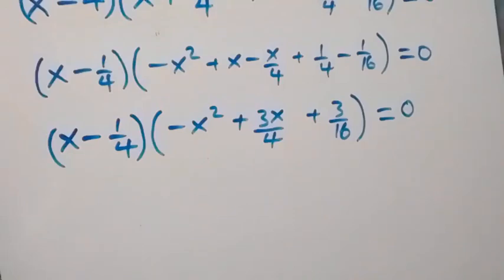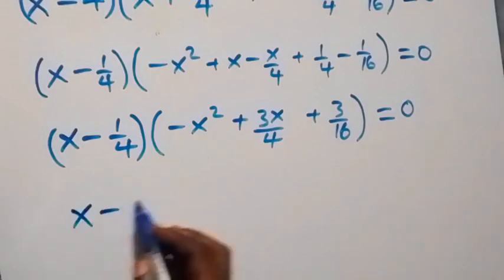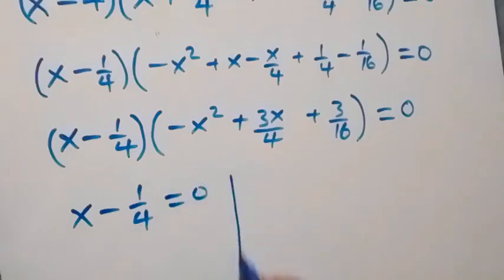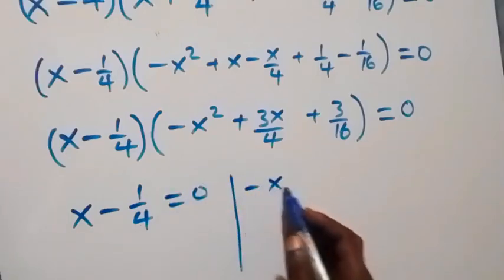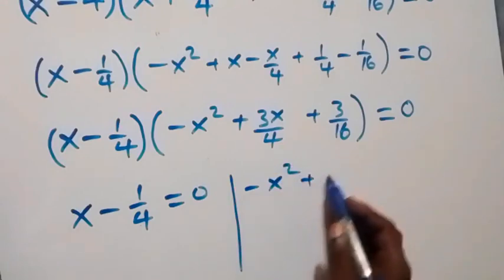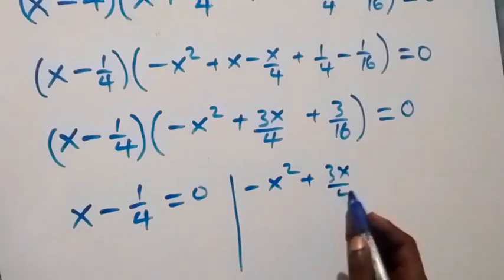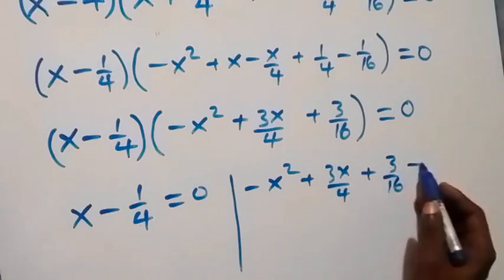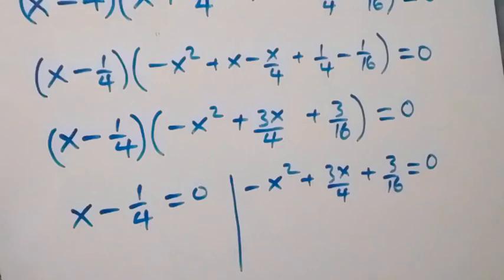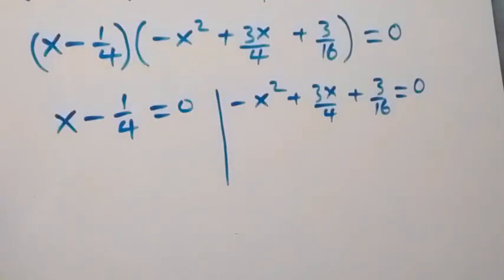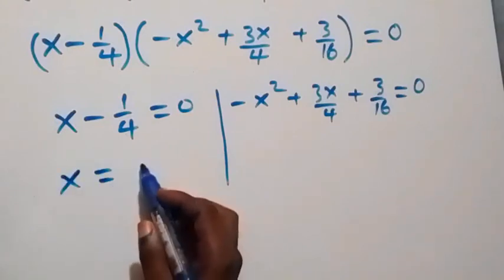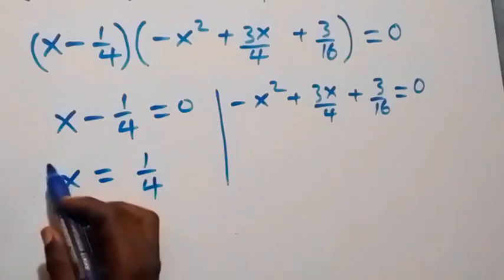From this we have two possible cases. Case one: x minus 1 over 4 equals zero, which gives x equals 1 over 4. Case two: minus x squared plus 3x over 4 plus 3 over 16 equals zero.